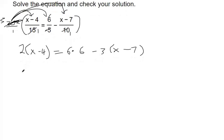Now we can distribute. That's 2x minus 8. 6 times 6 is 36. Distribute a negative sign. Watch out, that's negative 3x plus 21.